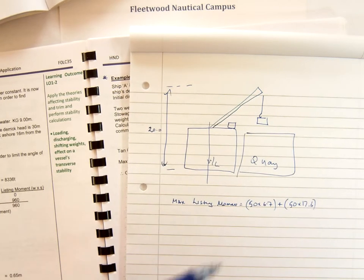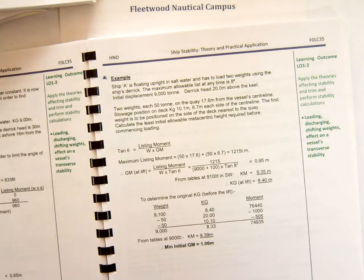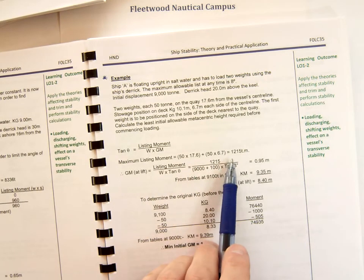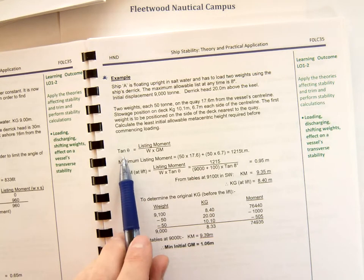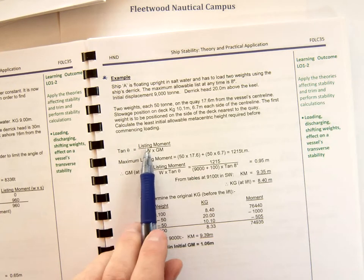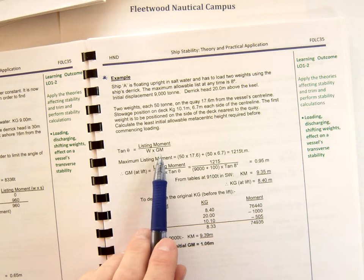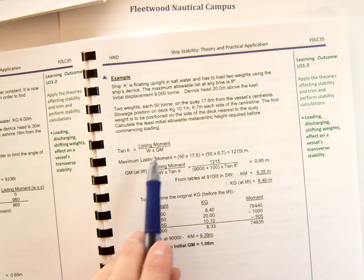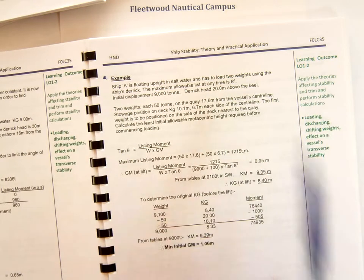So we know what our maximum listing moment is going to be. We've worked it out and it's 1215 tonne-metres. By rearranging the formula — tan θ equals listing moment over displacement times GM — we can get GM on its own. Because we know tan θ, we're told the angle is 8 degrees.